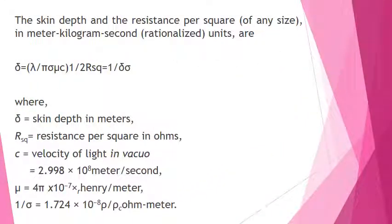Therefore, the skin depth can be obtained as delta equal to lambda by pi sigma mu C, where delta is the skin depth in meters and R square resistance per square in ohms. C is the velocity, mu is 4 pi into 10 power minus 7, permeability of free space, and 1 by pi sigma conductivity is given as 1.724 into 10 power minus 8 rho by rho C.